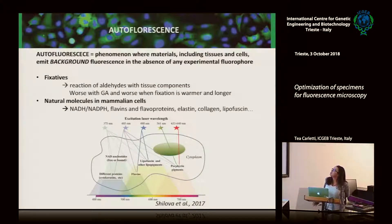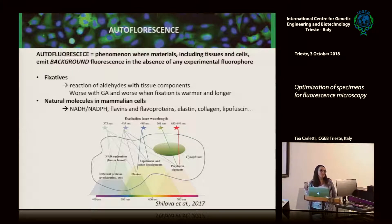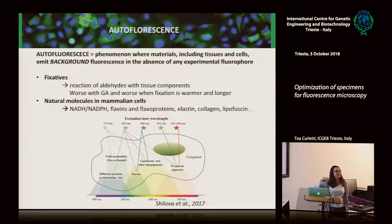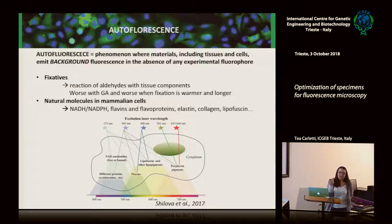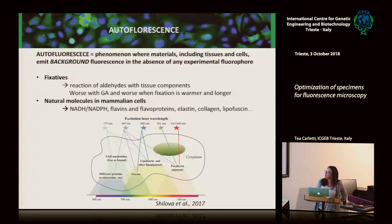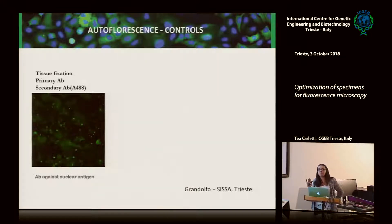Autofluorescence is a phenomenon where materials — including tissues and cells — emit background fluorescence in the absence of an experimental fluorophore. Natural molecules in mammalian cells can emit some fluorescence. Importantly, your fixative can induce autofluorescence because of the reaction of free aldehydes in your samples. What you can do to check autofluorescence is work with controls — always have controls. I took this slide from Grandolfo's lesson last year: a student showed her tissue fixed and treated with a primary antibody against a nuclear protein and then a secondary antibody.